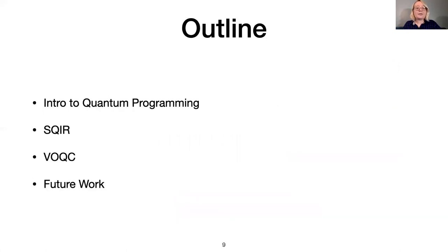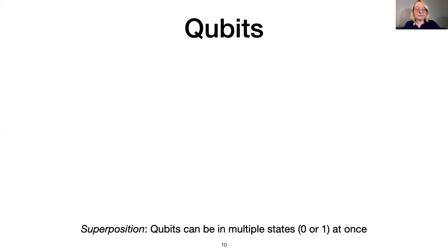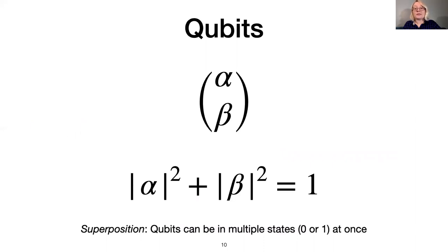I will begin with an introduction to quantum programming before I move on to the core of our paper, which is the SQUIRE language and the VOQC optimization library. A pure quantum state can be represented as a two-dimensional complex vector with unit length.